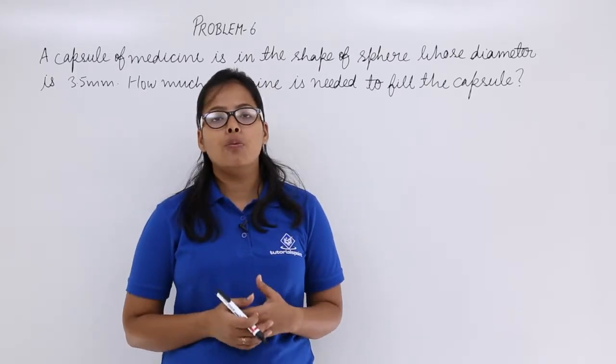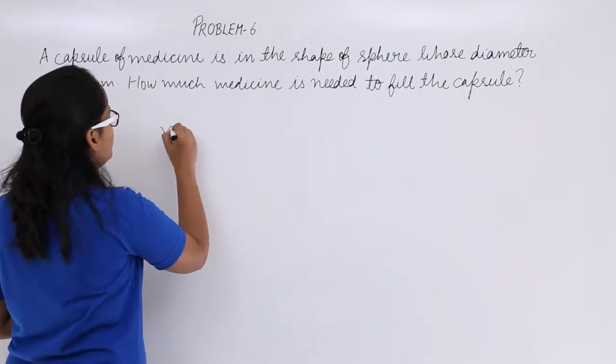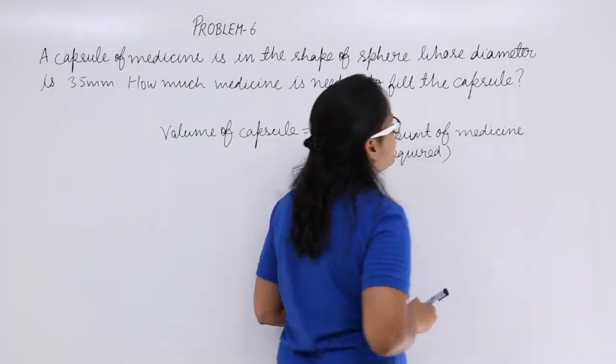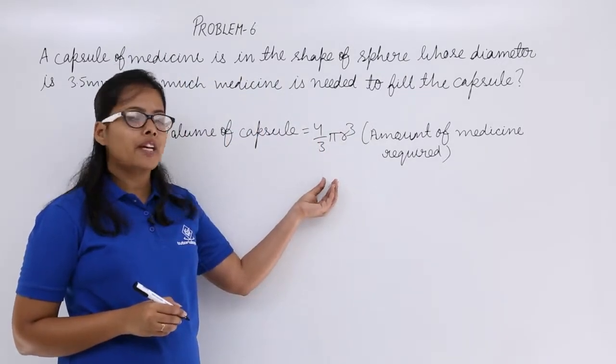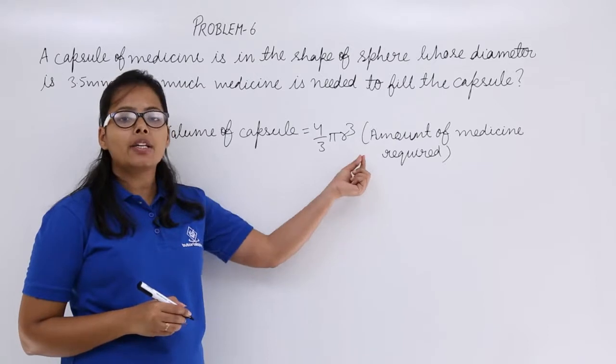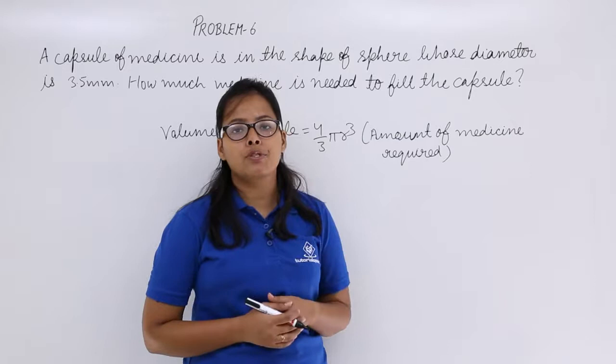So let's calculate volume of this capsule here. Volume of this capsule is equal to volume of sphere, which is 4/3 π r³, and this is also the amount of medicine required to fill this capsule.